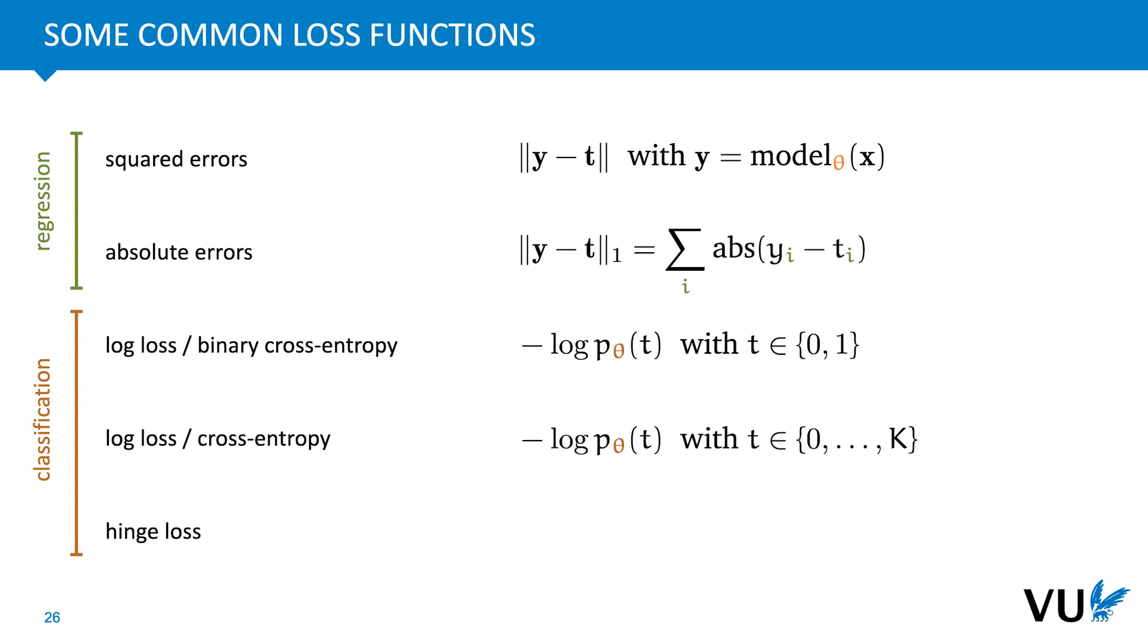There's the regular cross-entropy, which is the logarithmic loss for a classification problem with an arbitrary number of classes. And one final one that you might encounter is the hinge loss, which is based on support vector machines.